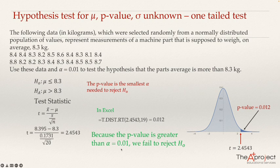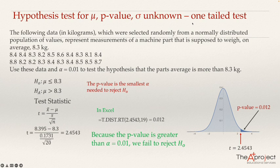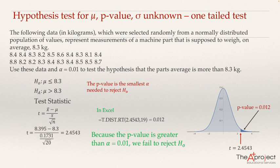With that, I finish my explanation of using the p-value for hypothesis testing. In other videos, I will explain other types of tests using the p-value — what happens with a two-tailed test, or a left-tailed test, for example when the alternative says 'less than 8.3.' I hope you found it useful. Thank you.